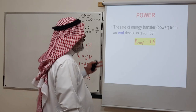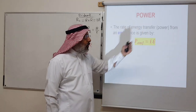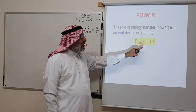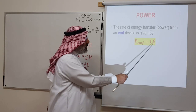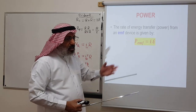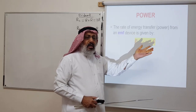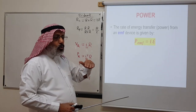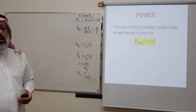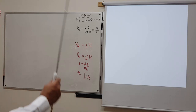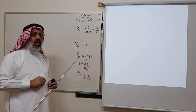Finally, the rate of energy transfer (power) from an EMF device is P = IE, where E is the EMF of the battery. Part of this power is dissipated as thermal energy in resistors; part may be used to charge other batteries, depending on the circuit. This concludes section one, in which we covered many scattered ideas that together enable us to deal with multi-loop circuits.